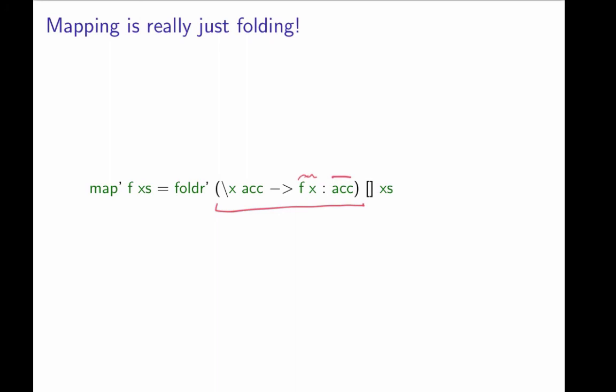And the accumulator should then just be the empty list, because then we can map the elements one by one by starting off with the initial value being the empty list. So there's really no need to have map as long as we have fold right.